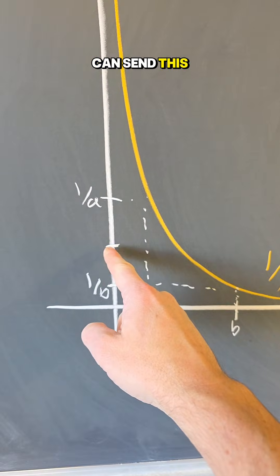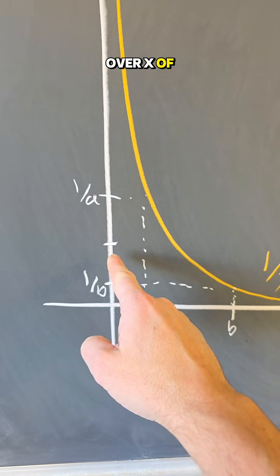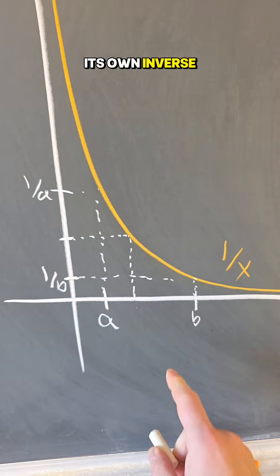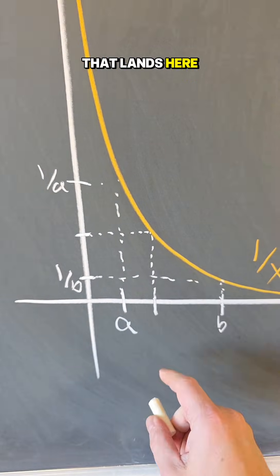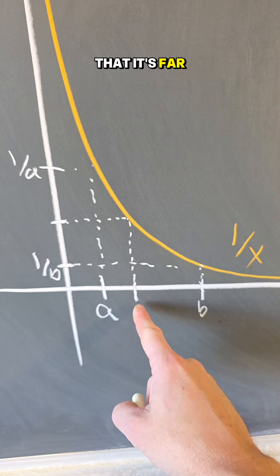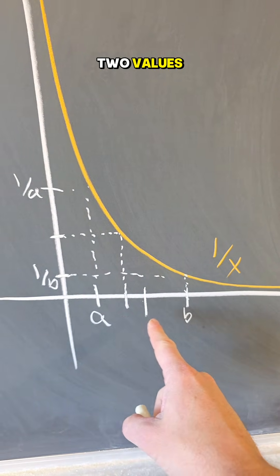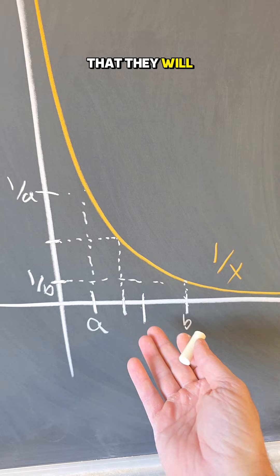And now I can send this back. I want 1 over X of this value, so since 1 over X is its own inverse, that lands here. And then you can see that it's far off from the average of the actual two values, so we see that they will not coincide.